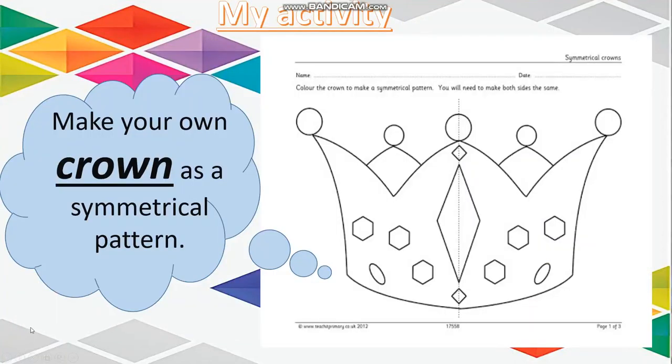Here we have an amazing activity. What is it? Yes. Here you will make your own crown. This crown, we can divide it by the line of symmetry. Can you see it, the line of symmetry? Yes. It divided the crown to two sides. You will color and make your design on this crown as a symmetrical pattern. Okay? If you colored all here red, you should color here also the same of this side. Okay? After finish all, take a photo of this crown and share it in the group of the WhatsApp with your friends.